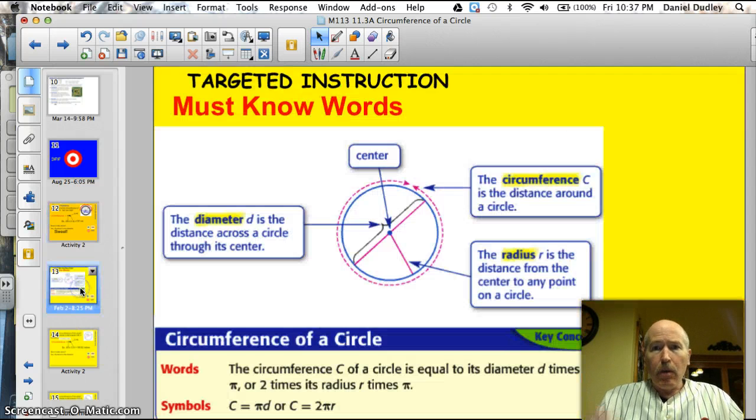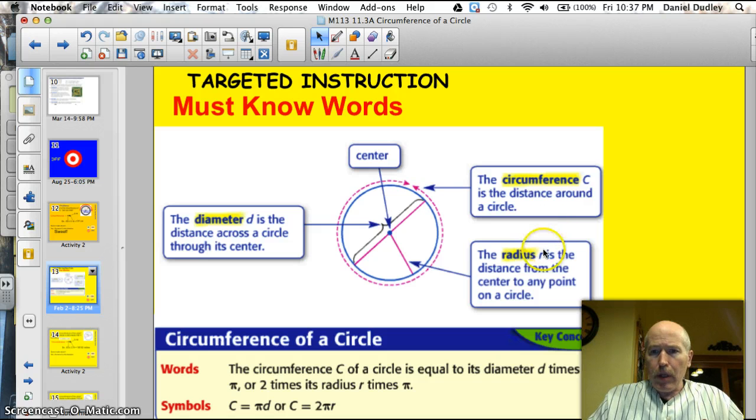All right. We need to cover some vocabulary about circles before we move on with our lesson. Here's a great graphic, and it's right out of your book if you want to see it again sometime. Diameter is the distance from one side of the circle to the other side of the circle, and it goes through the center. The center, of course, is the exact middle of a circle. And the radius is half of the diameter, or it is the distance from the center of the circle to any point on the outside, or circumference of the circle. And here we go. Here's the circumference, just like I had on my bike tire. It's the distance all the way around the outside.